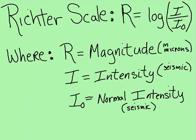Richter scale — here is at least one formula, there are others, but here is one we're going to use. The magnitude R is equal to the log of the intensity of the current earthquake over the normal intensity. R is the magnitude measured in microns, I is the intensity of the seismic activity you're measuring right now, and I-naught is called the normal seismic intensity.